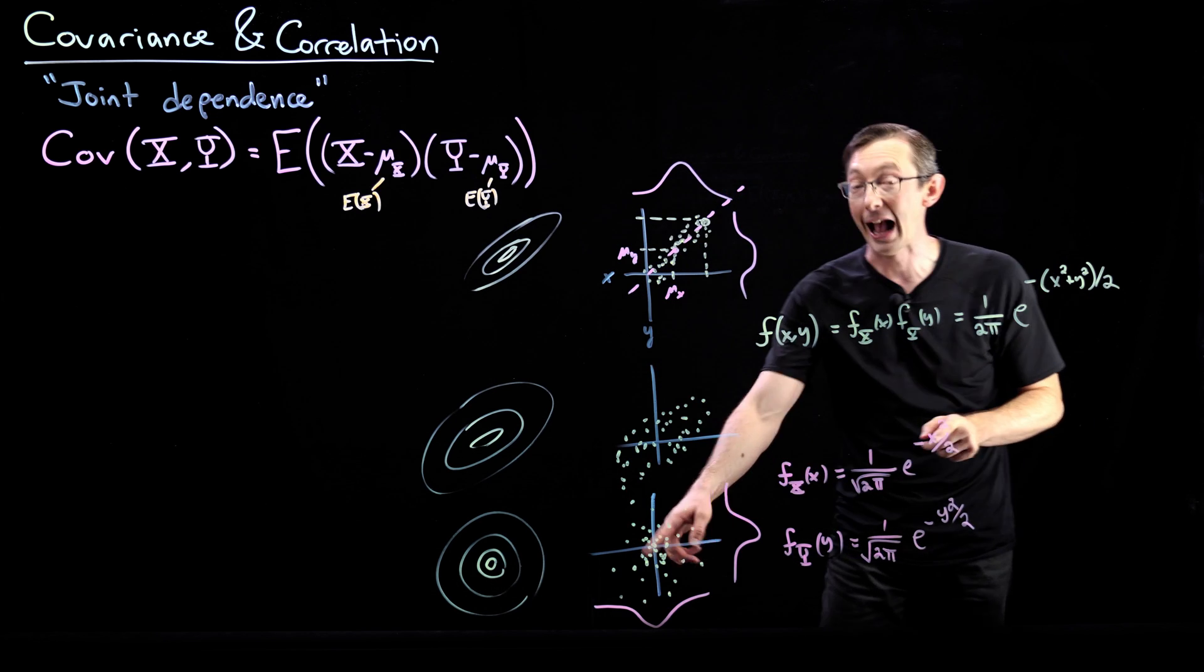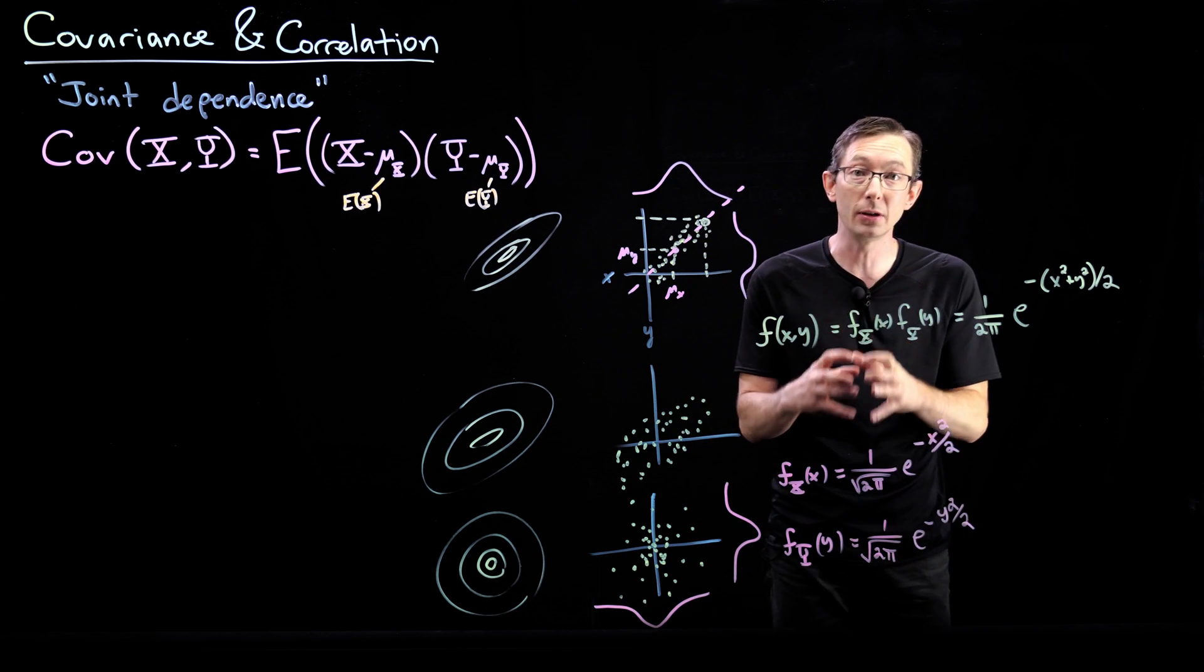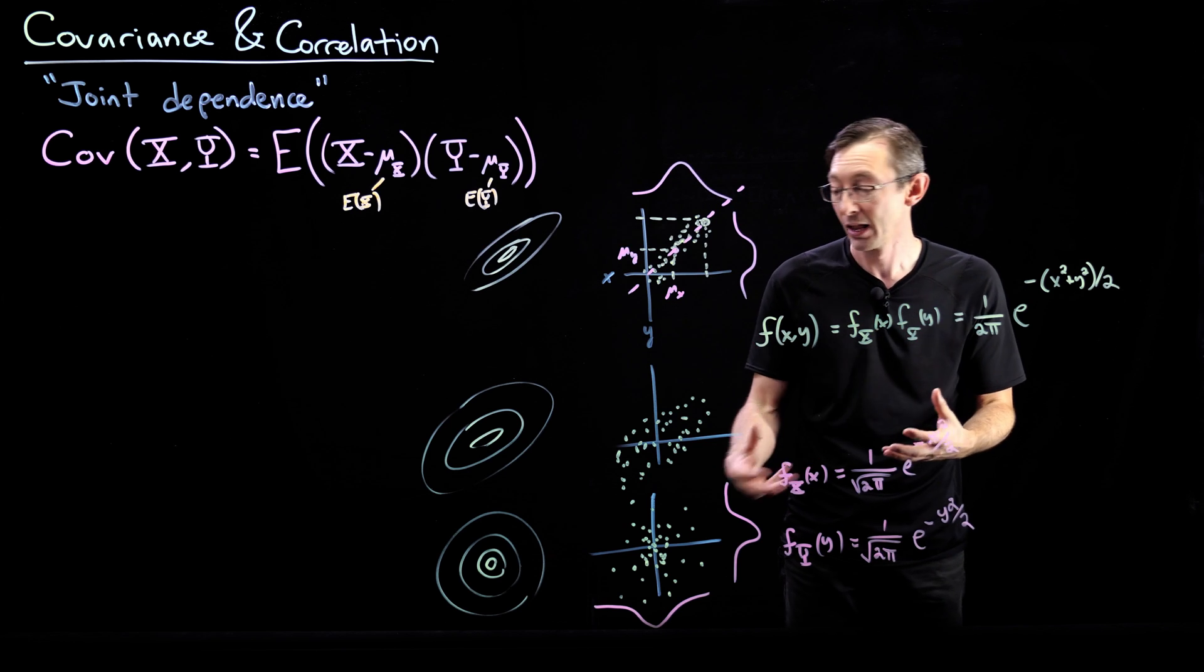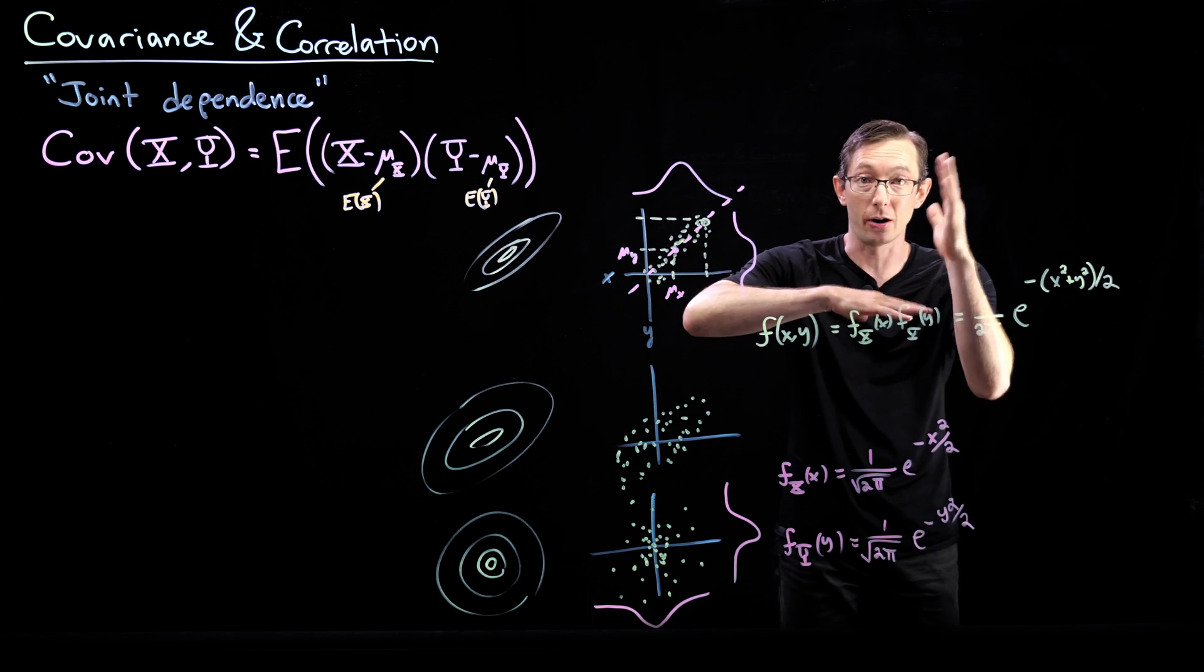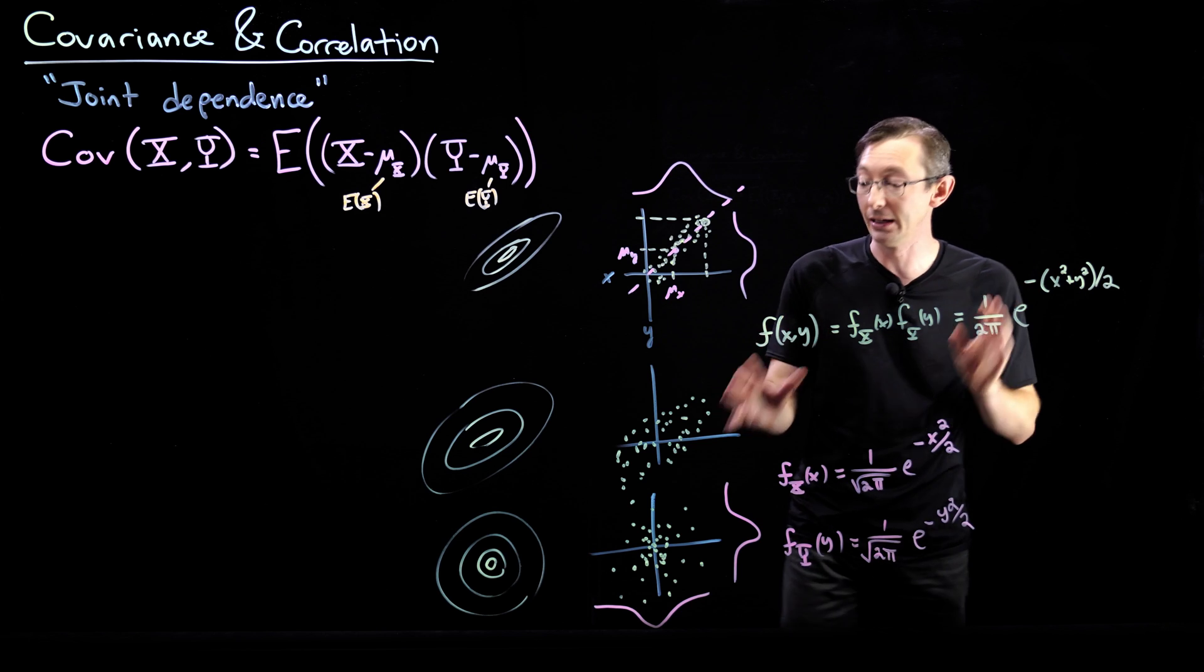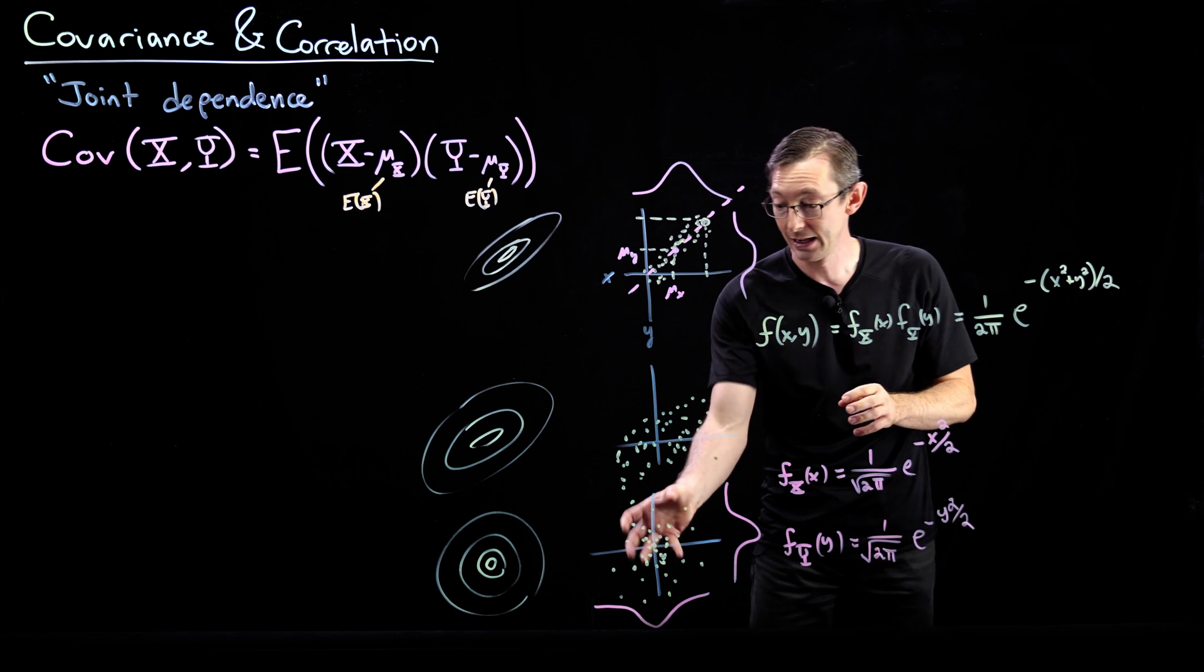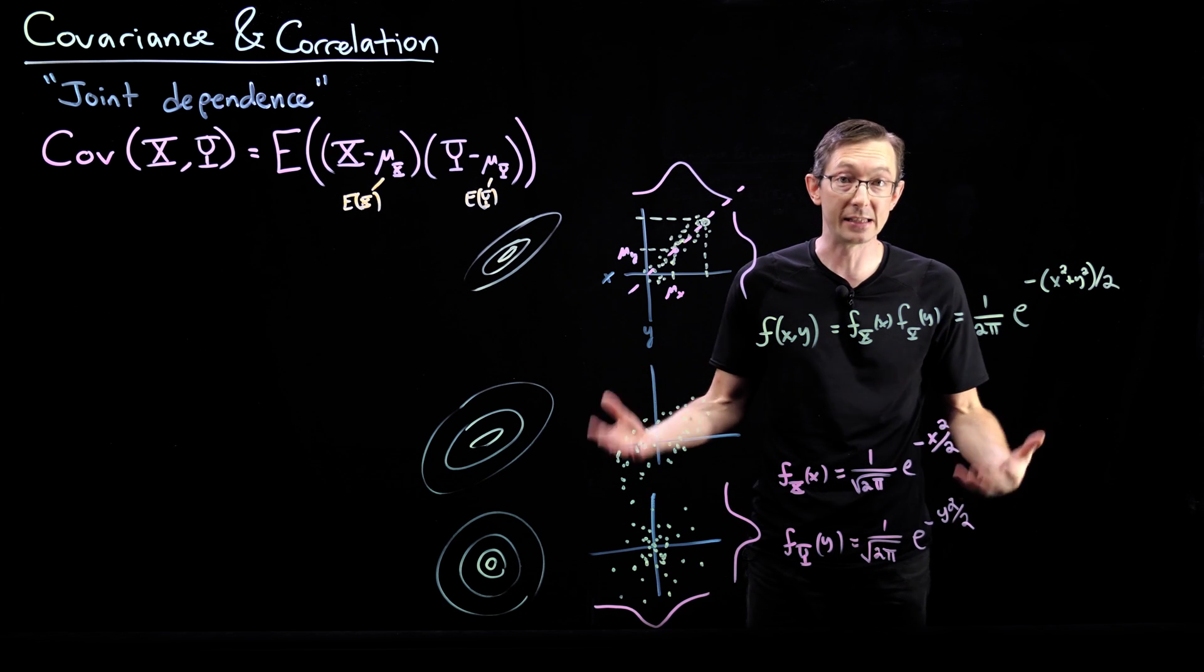This is the distribution of my 2D Gaussian, and we've just shown that x and y are actually independent. So if I have a 2D multivariate Gaussian, then its x and y components are independent variables, meaning the covariance of this x and y should be zero.